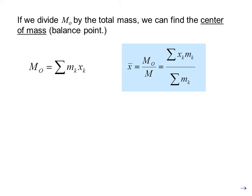If we divide M_o by the total mass, we can find the center of mass or balance point. So x̄ equals M_o divided by M, which equals the summation of all the distances times all the masses, divided by the summation of all the masses.